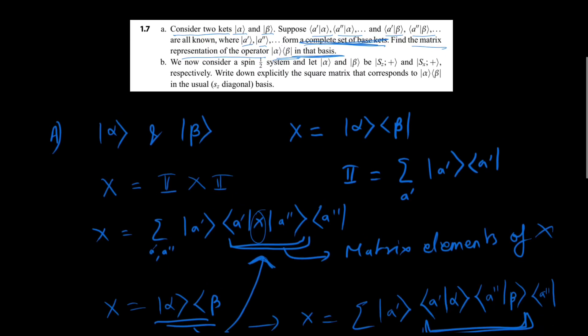The second question says that we now consider a spin half system and let ket alpha and ket beta be the spin in positive direction in z axis and the spin in positive direction in the x axis, or s_z plus and s_x plus respectively. Now, write down explicitly the square matrix that corresponds to ket alpha bra beta in the usual z diagonal basis.